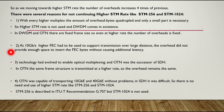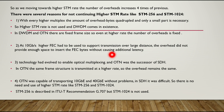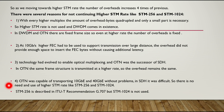This is the second reason why we don't use HTM 256 and HTM 1024. At 10 Gbps, the higher FEC has to be used to support transmission over larger distances. The overhead did not provide enough space to insert the FEC bytes without causing additional latency. Technology had evolved to enable optical multiplexing and OTN was the successor of HTM. In OTN the same frame structure is transmitted at higher rates so the overhead remains the same. OTN was capable of transporting 10 Gbps and 40 Gbps and higher bit rates without any problems. In HTM it was difficult.